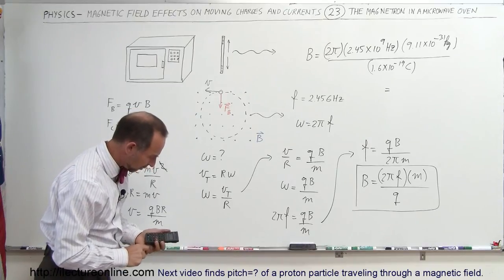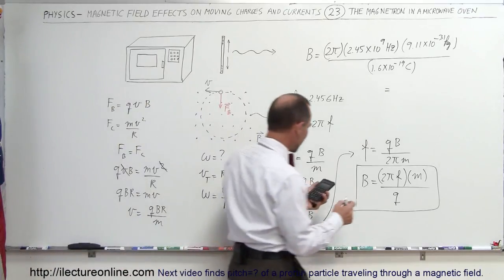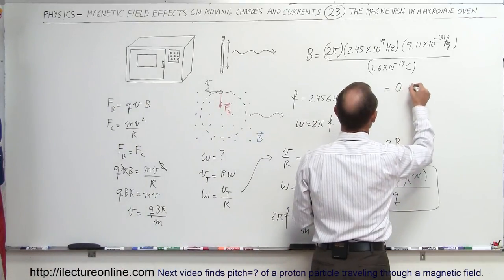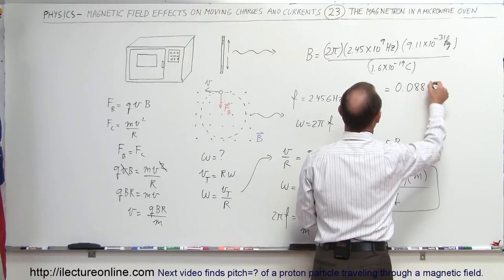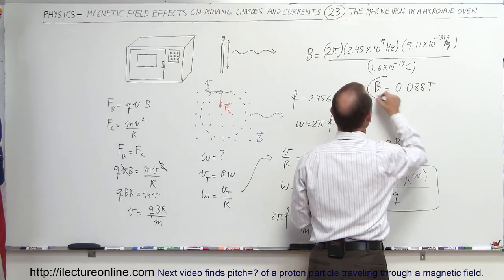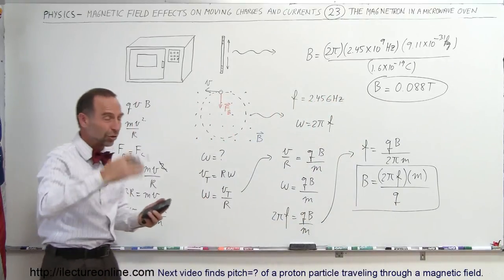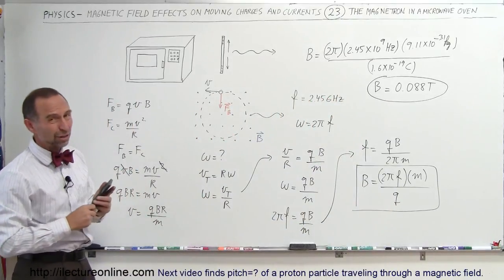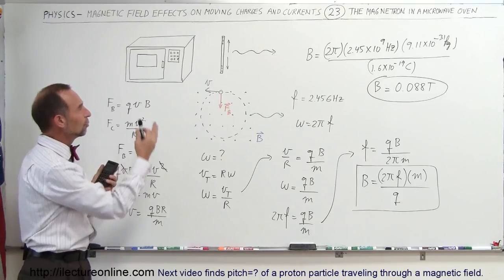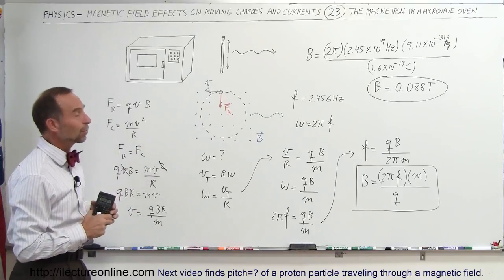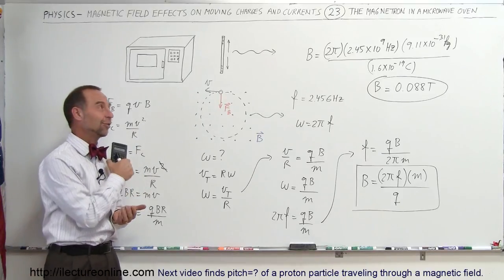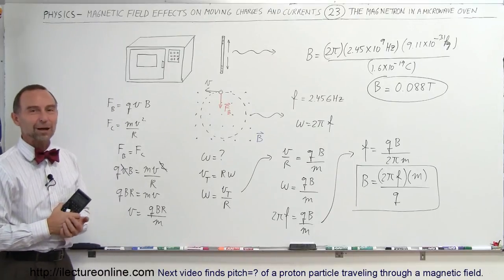and I have a strength of 0.088. 0.088 Teslas is the strength of magnetic field needed to cause electrons to accelerate at the right circular acceleration, or angular acceleration, as I should say, to produce microwaves of the exact wavelength we need to cook food. And that's how we use magnetrons in microwave ovens.